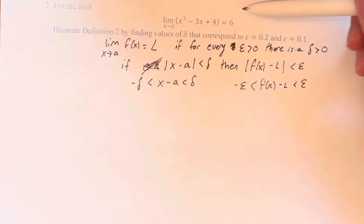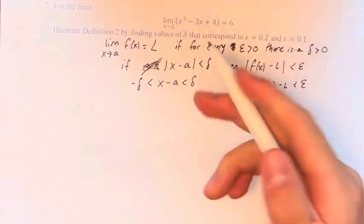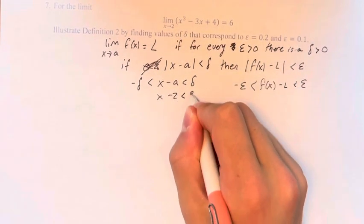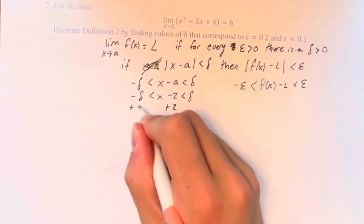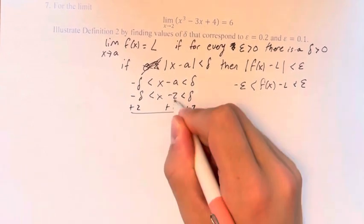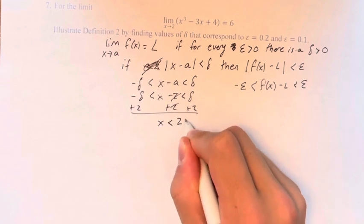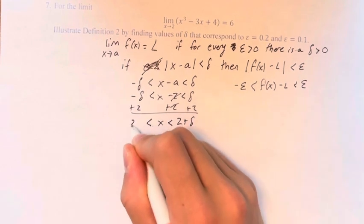And what does that actually correspond to? Well, a here is 2. So if this is x minus 2 is less than delta, greater than negative delta, adding 2 to solve for x, we get that x is less than 2 plus delta and it's greater than 2 minus delta.